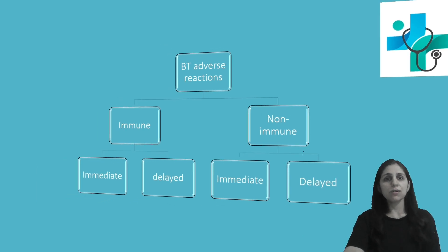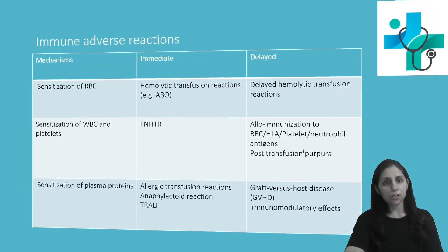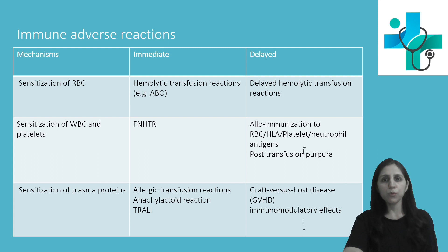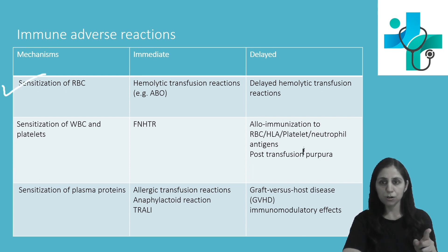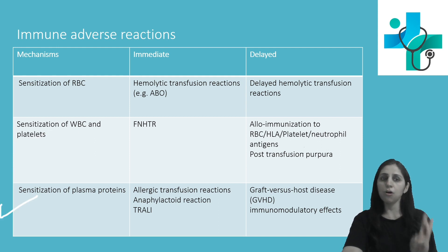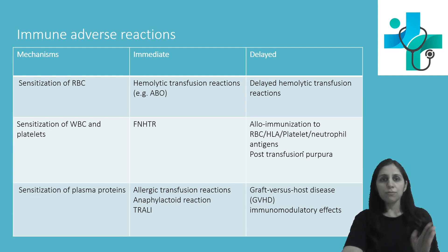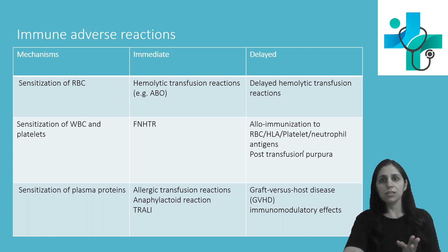Now let us first discuss in detail immune adverse reactions. The pathological mechanisms for development of these reactions are sensitization to RBC, WBC and platelets, or to plasma proteins. Now let us see each of the immediate and delayed reactions individually.